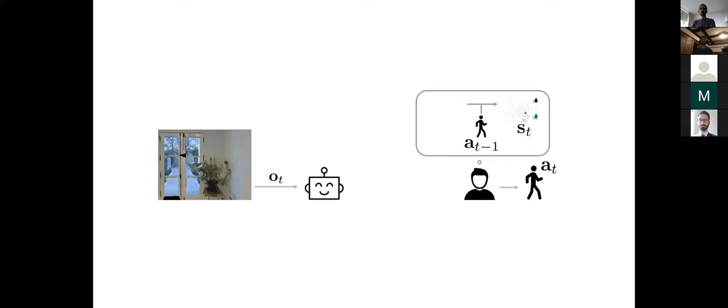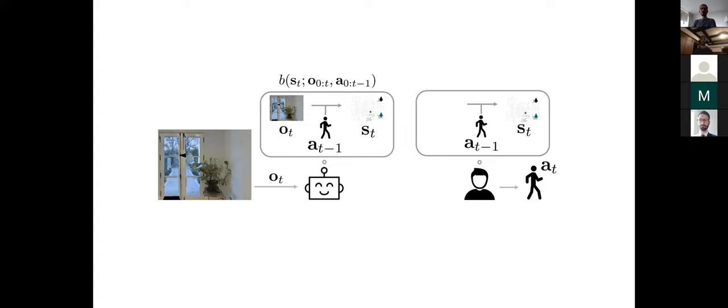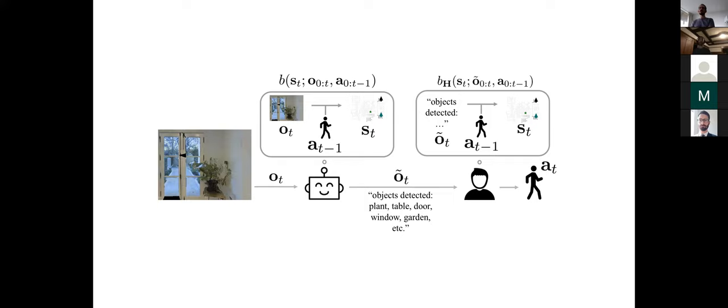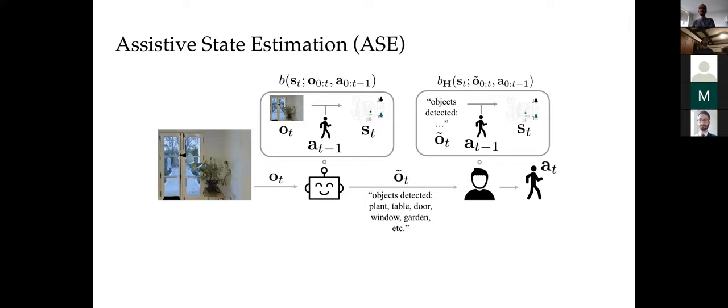The key insight is that true full observations are not necessarily the most informative about the state, especially when they're being processed incorrectly due to systematic biases. We operationalize this by using an automated assistant to process the full observation on behalf of the user. The assistant performs state estimation unencumbered by the user's biases, then provides the user with a modified observation that is more accessible. The user performs state estimation using their potentially biased estimator and takes their own actions. We call this method Assistive State Estimation, or ACE.